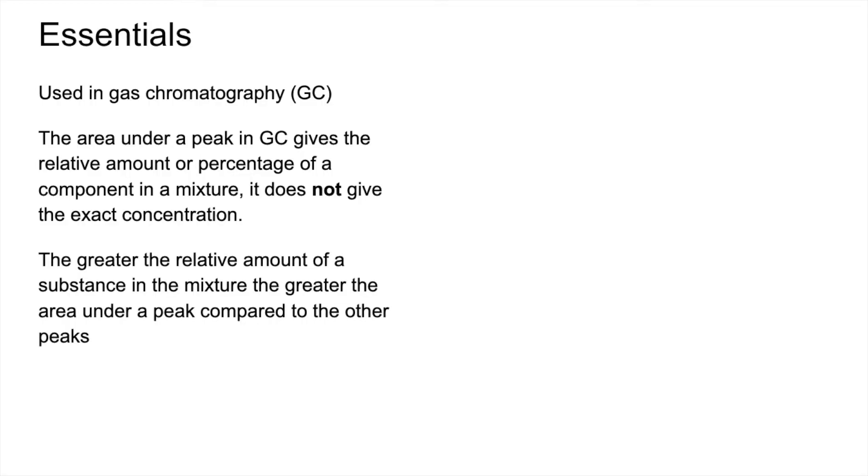The greater the relative amount of a substance in the mixture, the greater the area under the peak compared to the others. So using this gas chromatogram as an example, you can see there are five peaks. So that means there are five components in the mixture.